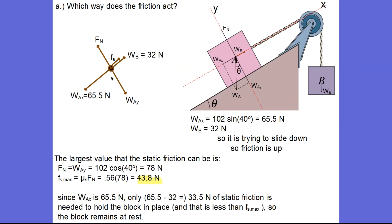Our maximum static frictional force is μ_s times the normal force. 0.56 was given to us as μ_s, the normal force is 78, so F_s max is 43.8. So together, 43.8 and 32 is bigger than 65, so the frictional force is not going to cause the block to move up the ramp. Since the x component of block A's weight is 65 and a half newtons, we only need 33 and a half newtons of static friction to hold it in place. We could have up to 43.8 newtons, so the block remains at rest.